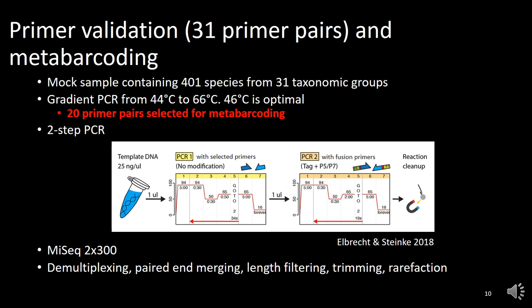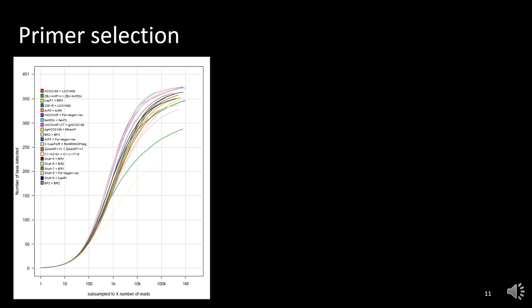So what do we get out of this? This is showing you a species accumulation curve. On the x-axis you can see the different read depth, going all the way up to 1 million reads, and on the y-axis is the number of taxa detected. Different colors indicate different primer pairs. What is striking is that one particular primer pair is not really capturing much of the diversity simply because there were not enough reads, so I'll continue the analysis without this primer — leaving 19 primers in total. To compare all these different primer pairs, we need to normalize them, and I found that around 100k was a good number for normalization.